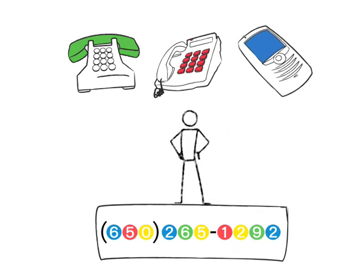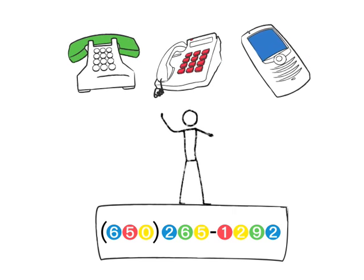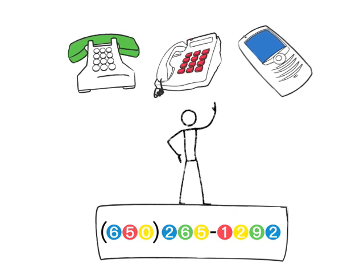And with a Google number, you choose where it rings. It can ring all your phones at once, or different phones, based on who's calling.